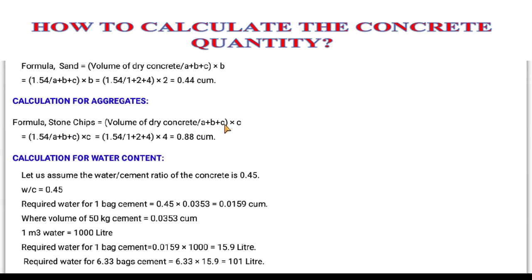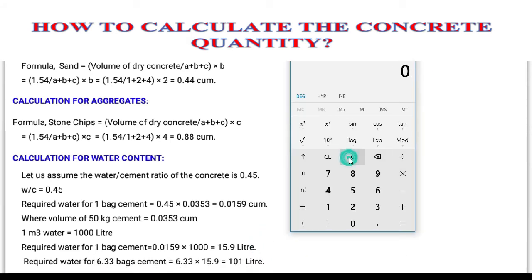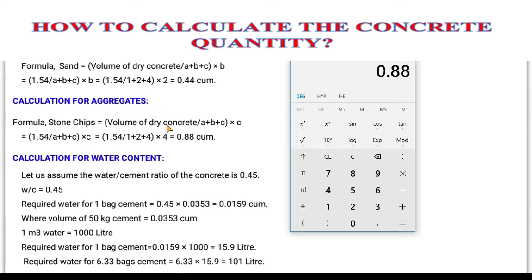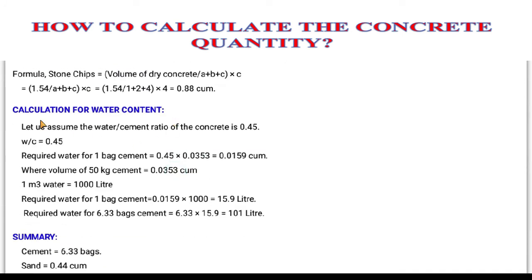Next, calculation for aggregates (stone chips). Volume of dry concrete divided by the sum of the grade of concrete ratio, then multiplied by 4 because the aggregate ratio is 4. So: 1.54 ÷ 7 × 4 = 0.88 cubic meters. On the calculator: 1.54 divided by 7 equals 0.22, multiplied by 4 gives 0.88 cubic meters of aggregate.